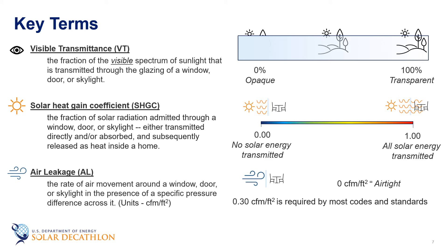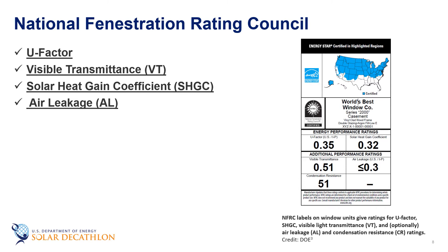Another term you will see often is air leakage, or the rate of air movement through a window, door, or skylight in the presence of a specific pressure difference across it. All of these parameters — the U-factor, the solar heat gain coefficient, the visible transmittance, and the air leakage — are important characteristics of a window that impact its energy performance. They are important enough that the National Fenestration Rating Council developed a standardized label requiring manufacturers to include these numbers on their product.